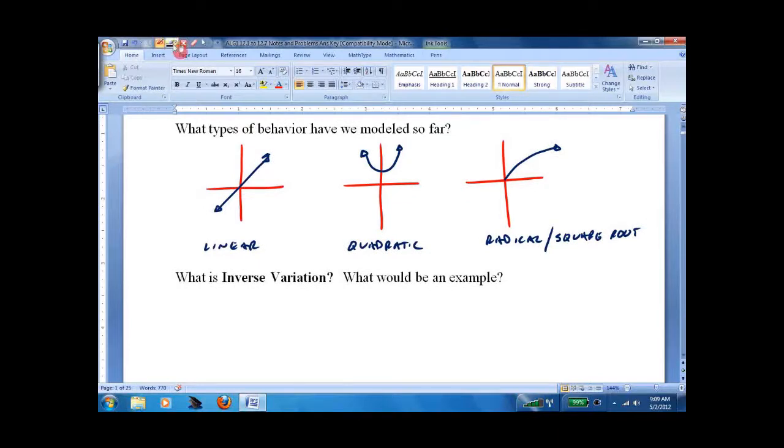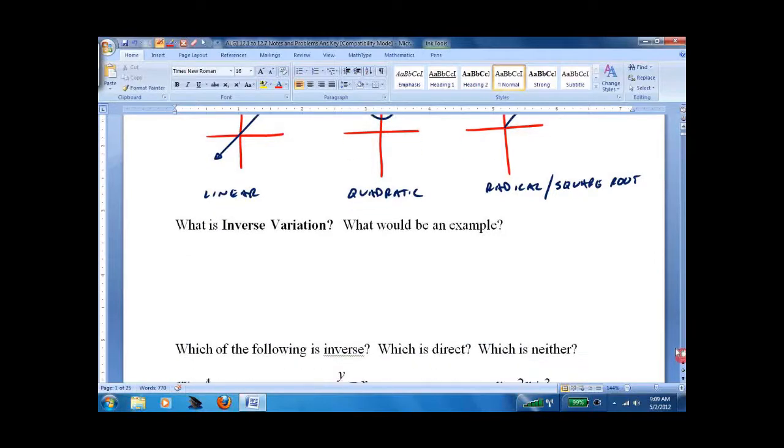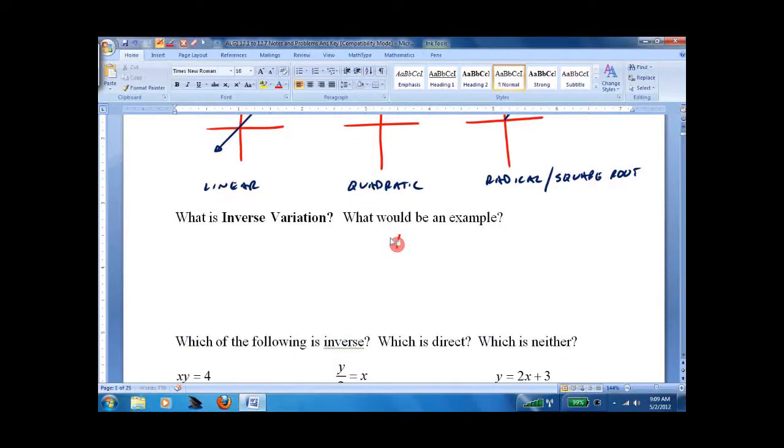Now we're going to start a new one. It's called Inverse Variation. An example of Inverse Variation is something you've seen in physics, F equals MA. If we solve for A, we get A equals F over M.